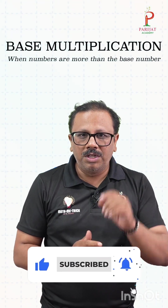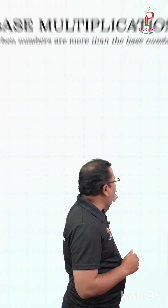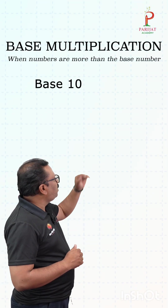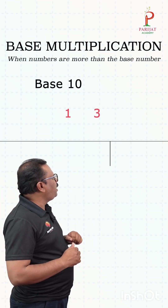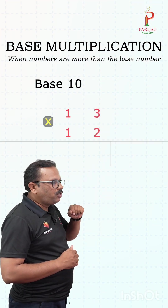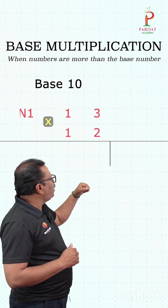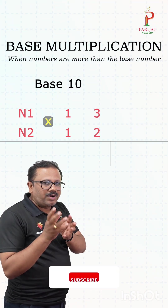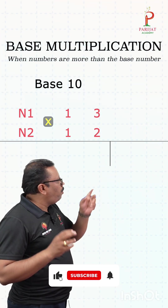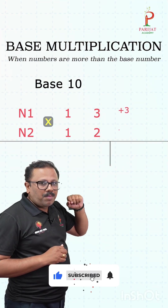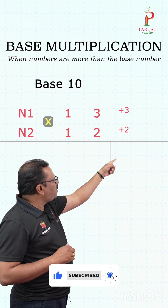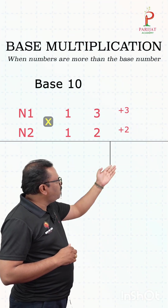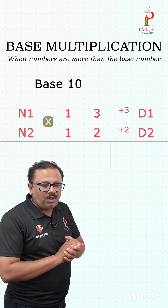Suppose the base is 10. Let's take one example: 13 multiplied by 12. This is number 1 and this is number 2. Now we just have to find out the difference between the base and each number, which gives us plus 3 and plus 2 — written in front of that number. This is deviation 1 and deviation 2.